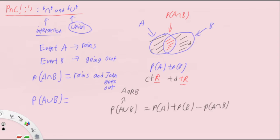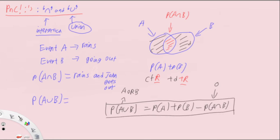Of course, if there is no intersection, then P(A∩B) is zero and it's simply P(A) + P(B). For example, if event A is raining and event B is not raining, there's no overlap, so P(A or B) = P(A) + P(B). But if event A is raining and event B is John going out, there is an intersection because John can go out whether it's raining or not. That's the visual idea behind intersection and union, derivable just by sketching a Venn diagram.